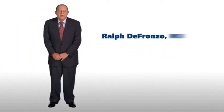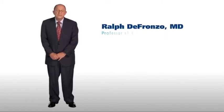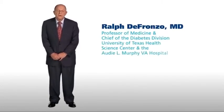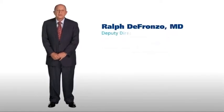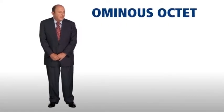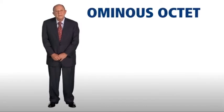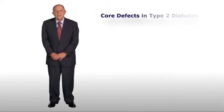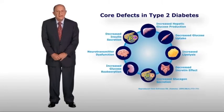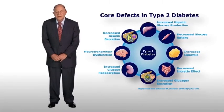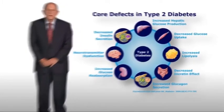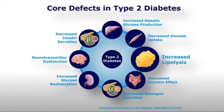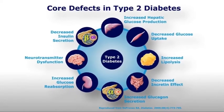Hello, my name is Dr. Ralph DeFranco and I am Professor of Medicine and Chief of the Diabetes Division at the University of Texas Health Science Center and the Audiel Murphy VA Hospital in San Antonio, Texas. I also serve as the Deputy Director of the Texas Diabetes Institute. The ominous octet is a phrase that I used in the Banting Lecture at the American Diabetes Association meeting in 2008 to refer to the eight core defects implicated in the pathogenesis of type 2 diabetes mellitus. In this presentation, I will review each of the eight core defects and discuss which ones are affected by GLP-1.